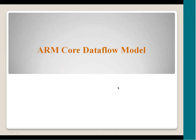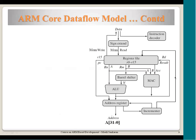Now let us look at the data flow model of ARM. This diagram shows the internal structure of how instructions reach the processor and how they are processed. The data comes from memory. ARM7TDMI uses a von Neumann architecture — a non-Harvard architecture — meaning both instructions and data come from the same memory. So data as well as instructions come into the processor through the same path.